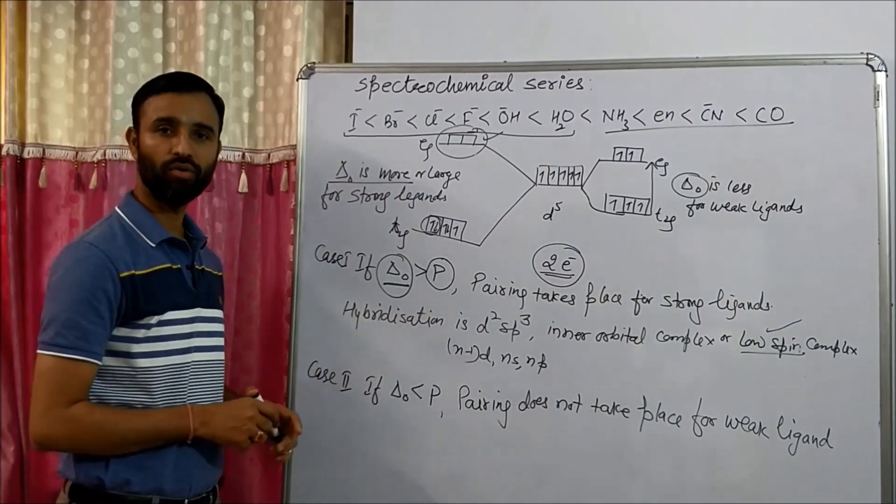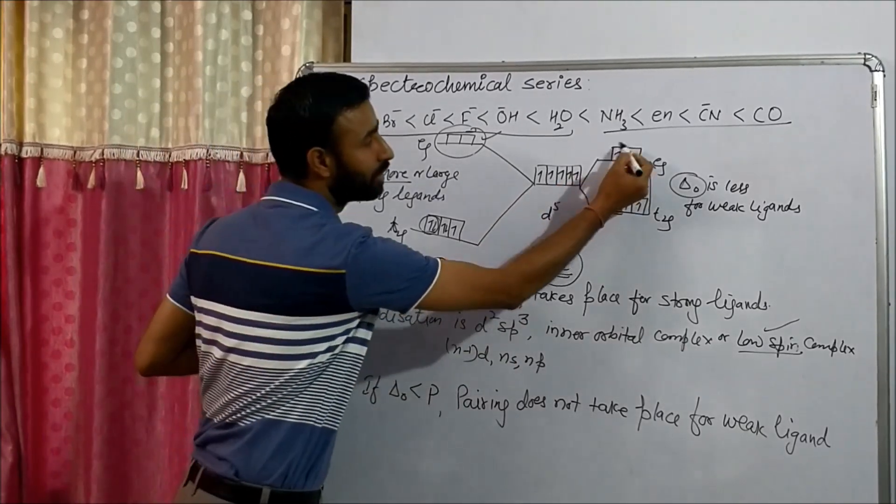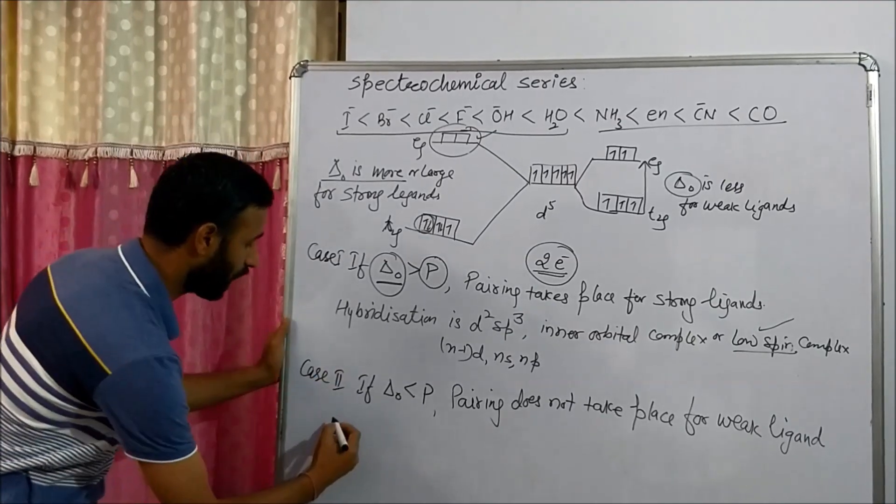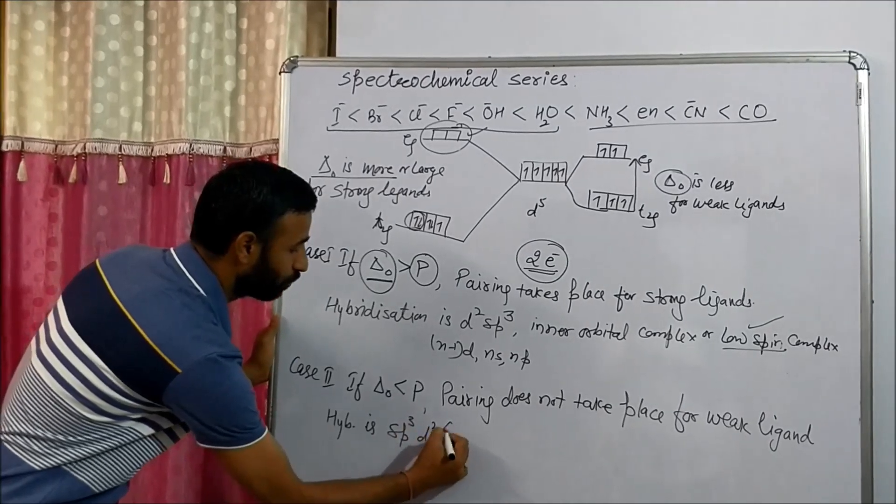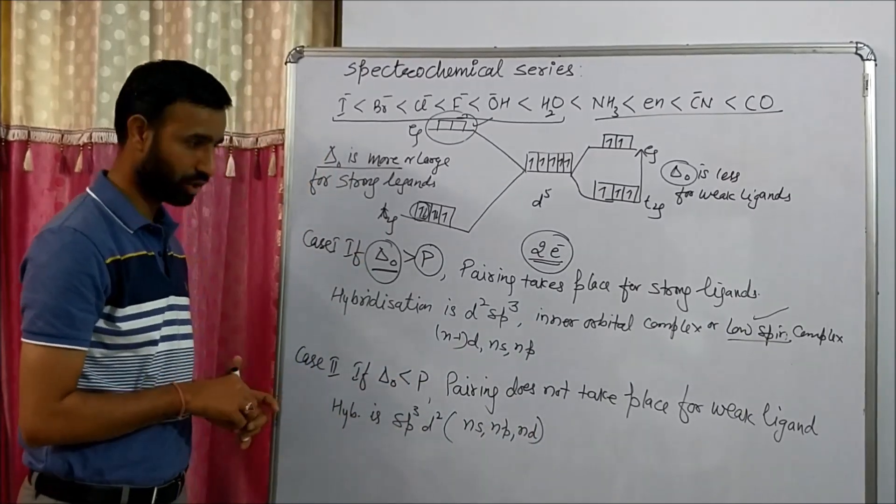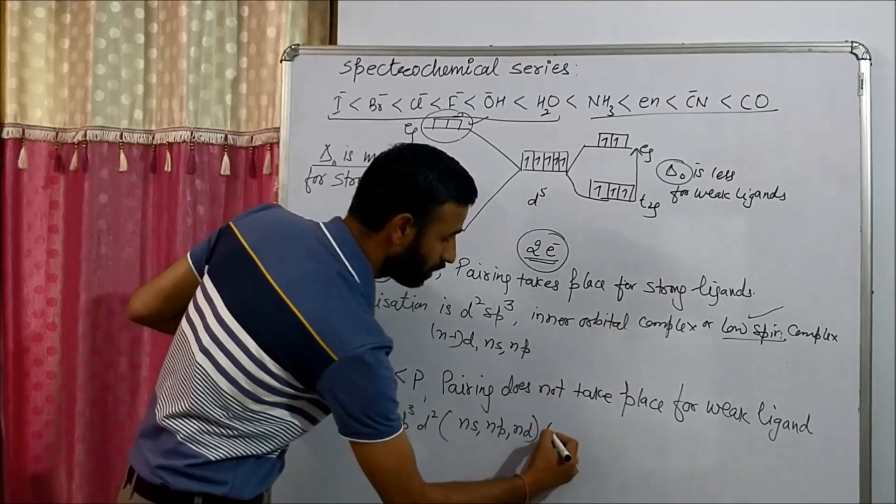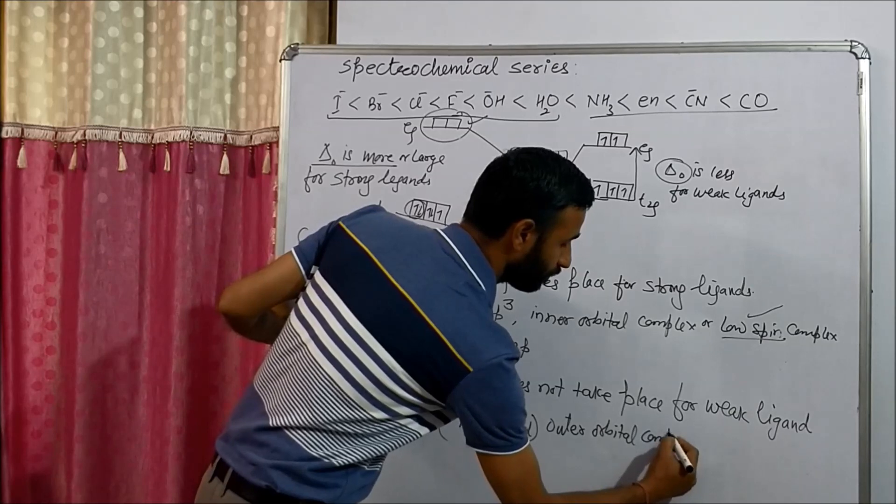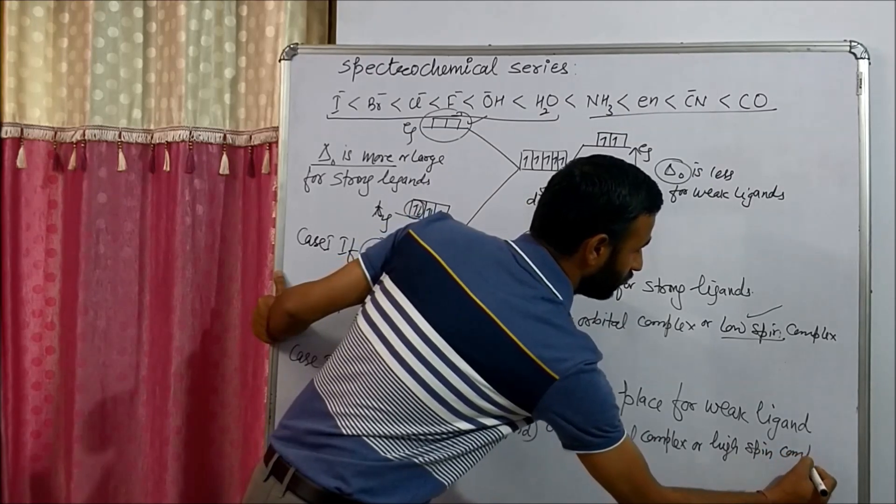So then hybridization is, now sp3d2. Because inner orbitals are all filled with one electron. So now hybridization is sp3d2. Means now ns, np, and nd orbitals are involved in hybridization. So which orbitals are used? Outer d orbitals. So this is called outer orbital complex, or high spin complex.